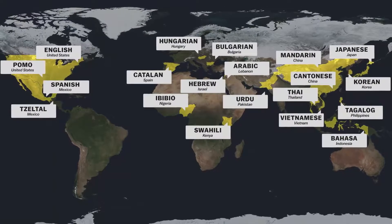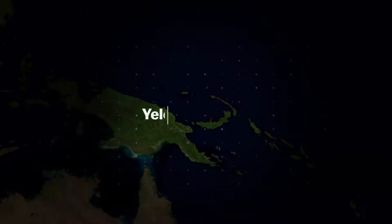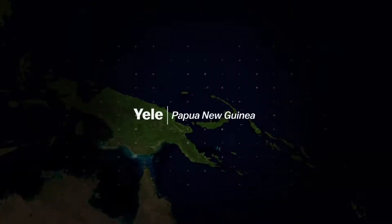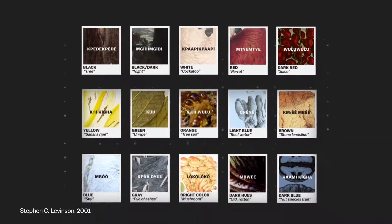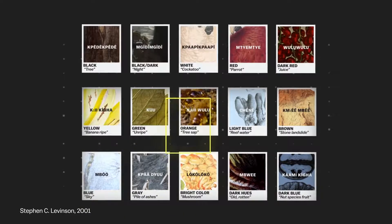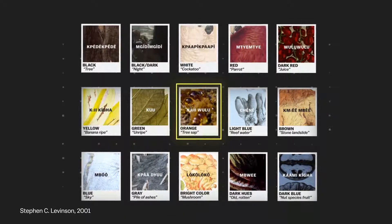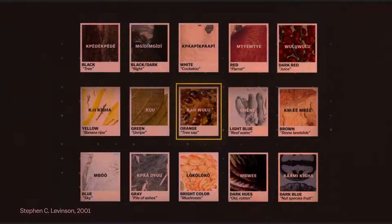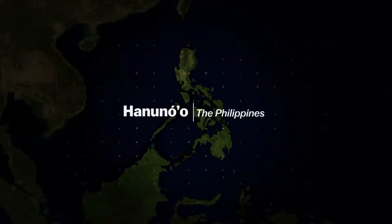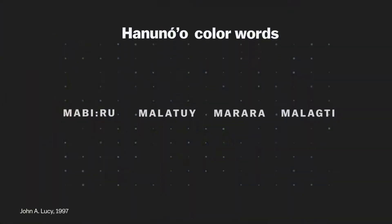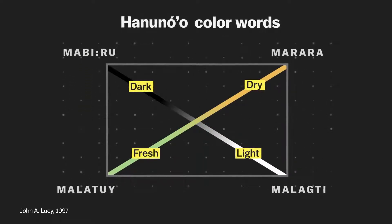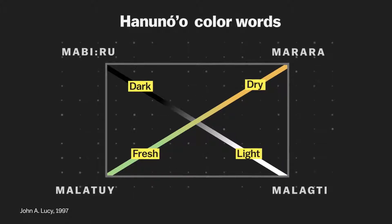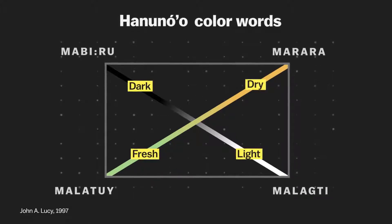There was also the problem of defining what a basic color term is. In the Yele language in Papua New Guinea, for example, there are only basic color terms for black, white, and red — but there's a broad vocabulary of everyday objects, like the sky, ashes, and tree sap, that are used as color comparisons covering almost all English color words. There are also languages like Hanunoo from the Philippines, where a word can communicate both color and a physical feeling. They have four basic terms to describe color, but they're on a spectrum of light versus dark, strength versus weakness, and wetness versus dryness. Those kinds of languages don't fit neatly into a color chip identification test.